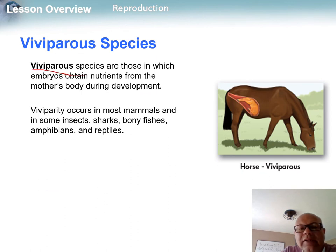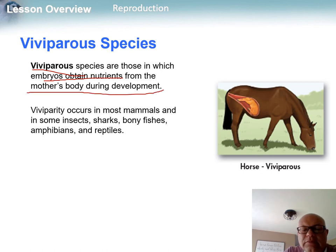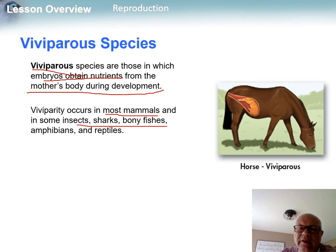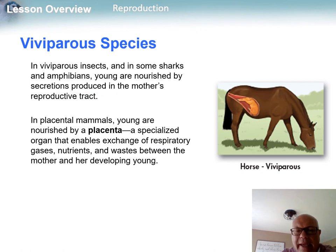Viviparous is where the embryos get all their nutrients inside the mother's body during development. Most mammals, including humans, use this method, as do some sharks, some insects, and a few amphibians and reptiles — though when we think viviparous, we're primarily thinking about mammals.